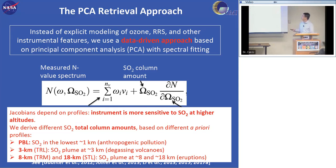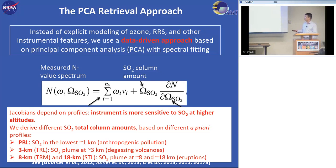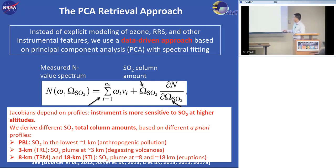The SO2 Jacobians are determined with radiative transfer calculations and depend on several factors — most importantly the profiles — because the instrument is more sensitive to SO2 at higher altitudes. Since we don't always have profile information from our measurements, we estimate a few different total column amounts based on different a priori profiles. For boundary layer SO2, we assume SO2 is in the lowest 1 km of the atmosphere. For degassing volcanoes we often assume a 3 km profile, and for large volcanic eruptions we assume 8 and 18 km profiles. These are all total column retrievals.